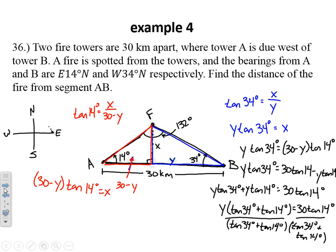So I've got y times some decimal number, tangent 34 plus tangent 14. So I can divide that away from both sides, leaving me with y. So let's hit the calculator. Be careful with parentheses. I've got 30 times tangent of 14 degrees. I get 7.47 something. I'm going to leave that answer in the calculator. And then in parentheses, tangent 34 plus tangent 14. And I find from all that work that y equals 8.096.